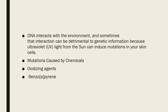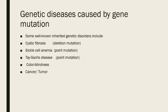Now I will show you an animation which will further enhance the concept of gene mutation. Some of the well-known inherited genetic disorders caused by gene mutation include cystic fibrosis, which is caused due to a deletion mutation; sickle cell anemia, which is caused due to a point mutation in which only one nucleotide changes and there is a different amino acid; and Tay-Sachs disease, which is also due to point mutation. Color blindness and cancer tumors are also caused by the mutation of a single gene.